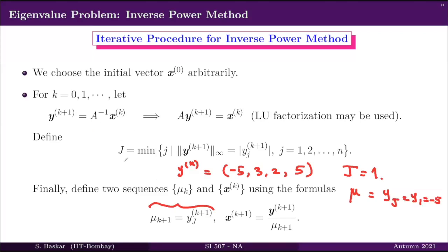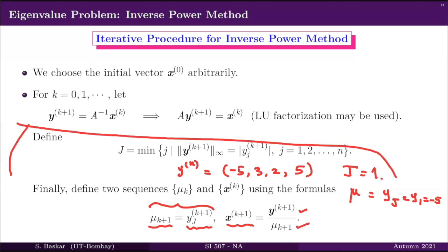This is how the maximum component is chosen, giving mu_k. Then x_{k+1} is defined as y_{k+1} divided by mu_{k+1}. The only difference from the regular power method is that for computing y_{k+1}, you either directly find A inverse and use it at every iteration, or you factorize A into LU form, keep L and U, and at every iteration do one forward substitution and one backward substitution to get y_{k+1}.